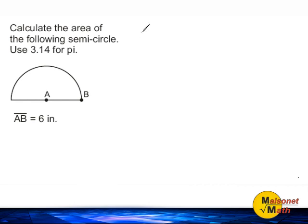In this problem, we have to calculate the area of the shown semicircle using 3.14 for pi.